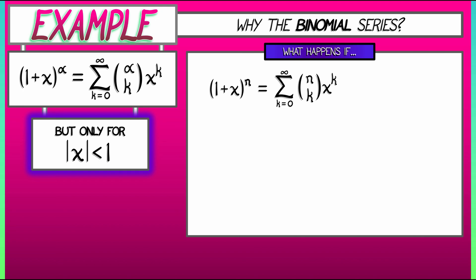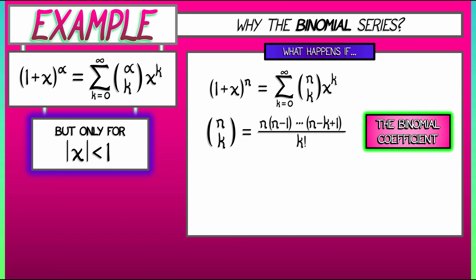Well, what is n choose k? This is really n times n minus 1 times yada yada yada. n minus k plus 1 divided by k factorial. That's the classic binomial coefficient, right? That's n factorial divided by n minus k factorial times k factorial. Got that cancellation going on there.